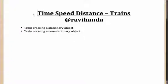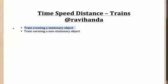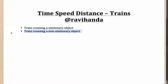Welcome to another session on time, speed, and distance. In this session we'll talk particularly about questions based on trains — two trains crossing, train crossing a man, man is running, and so on. These questions can be divided into two broad categories: when a train is crossing a stationary object, or when a train is crossing a non-stationary object — an object in motion.